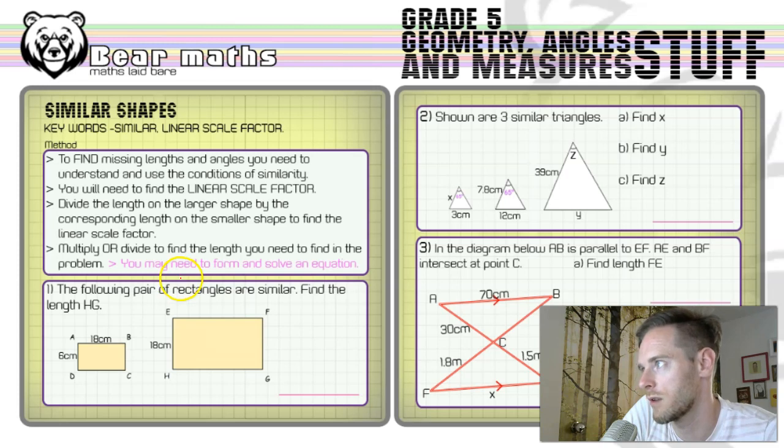I'll shut up now and get on with the method. To find missing lengths and angles, you need to understand and use conditions of similarity, which I did the last video on for you, similar triangles specifically. You'll need to find the linear scale factor. To do that, you divide the length on the larger shape by the corresponding length on the smaller shape. Then multiply or divide to find the length you need in the problem. You may need to form and solve an equation depending how you want to go about your business.